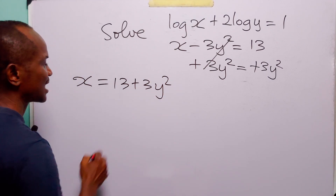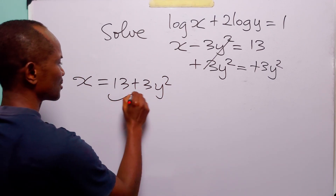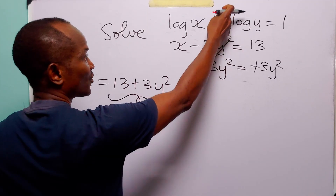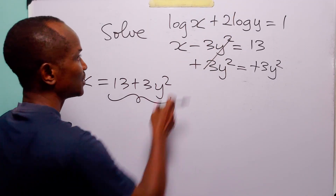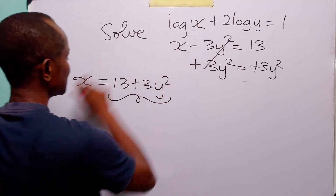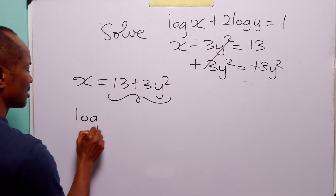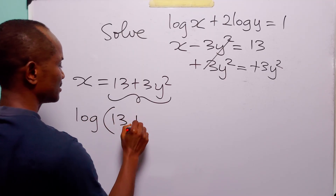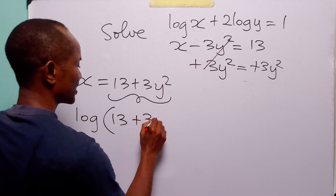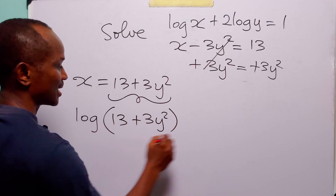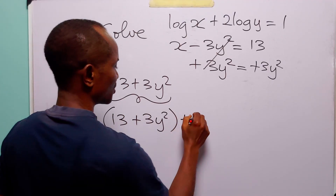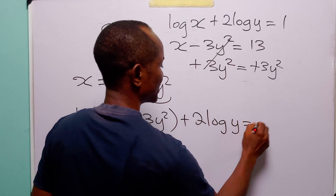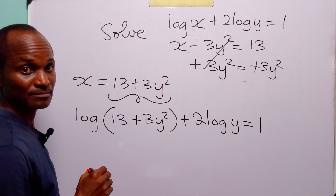What we are going to do is substitute this value for x in the first equation. When we do that, this equation becomes log(13 plus 3y squared) plus 2 log y is equal to 1.